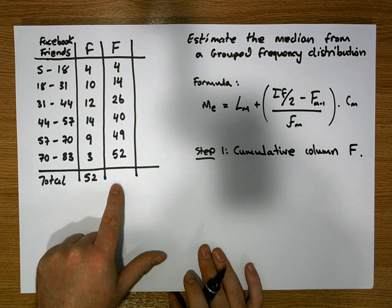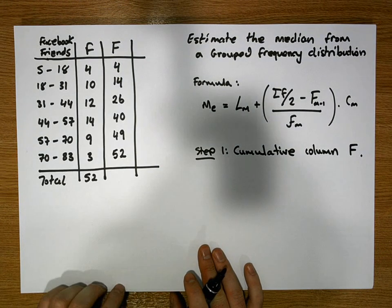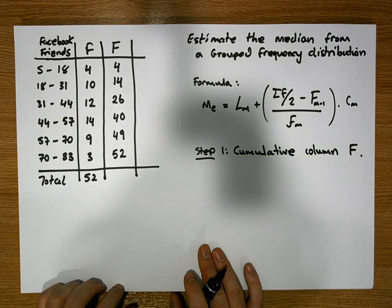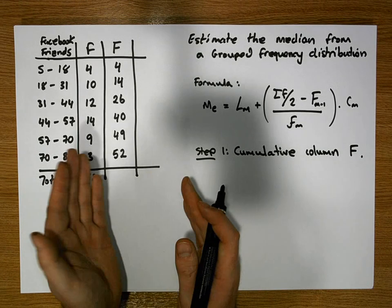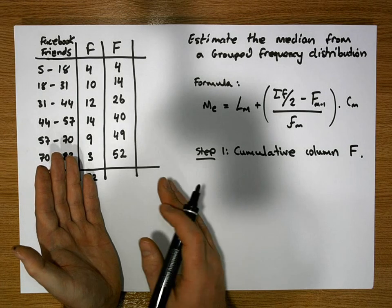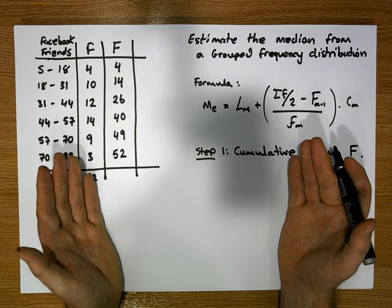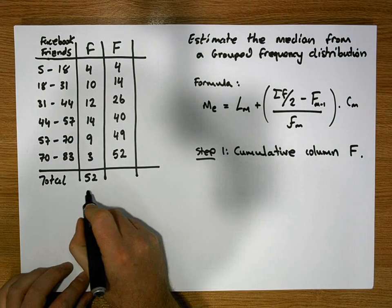We have half the observations on one side of the median and the other half on the other side. So what we know is that we have sigma f observations.